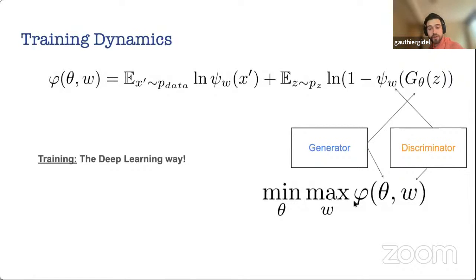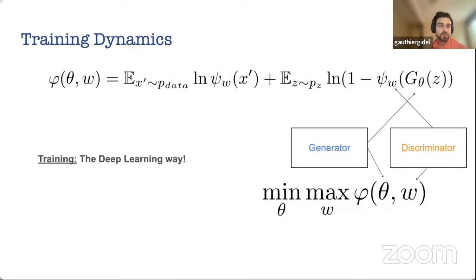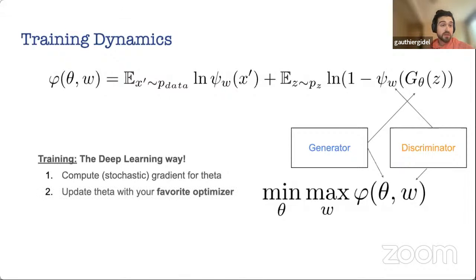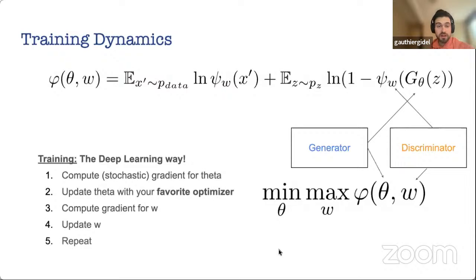This is unfortunate because in min-max games the equivalent of convex minimization is a convex-concave payoff, which admits nice convergence analysis. Nevertheless, just like in non-convex minimization where people were already training neural networks for classification despite non-convexity, in practice people compute stochastic gradients for θ and ω, update each with their favorite optimizer, and repeat until convergence.